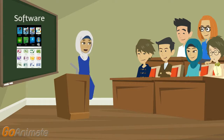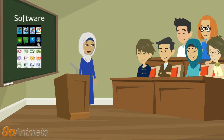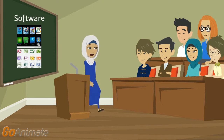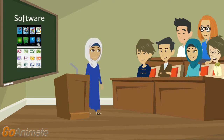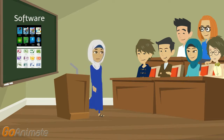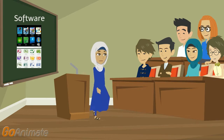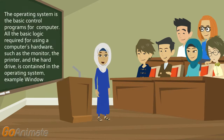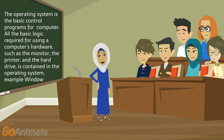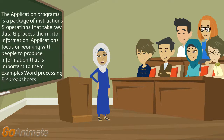We finished the explanation of the hardware. Now we'll talk about software, the second component of the computer. It has two categories: the operating system and application programs. The operating system is the basic control program for the computer; all basic logic required for using a computer's hardware is contained in the operating system — for example, Windows. Application programs are a package of instructions and operations that take raw data and process them into information. Examples include word processing and spreadsheet.